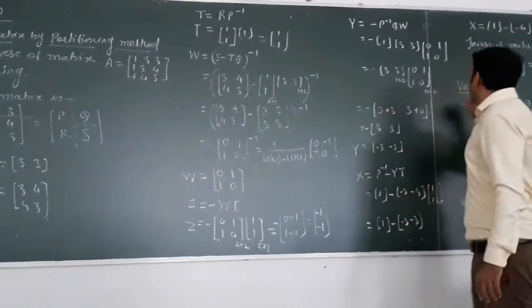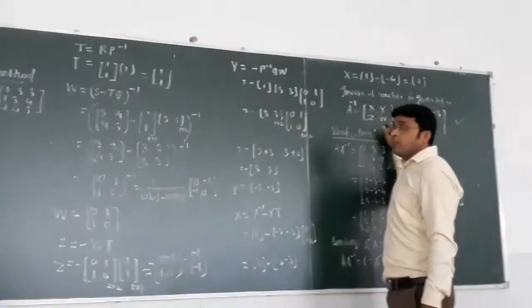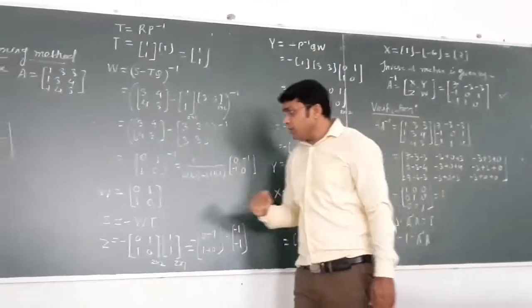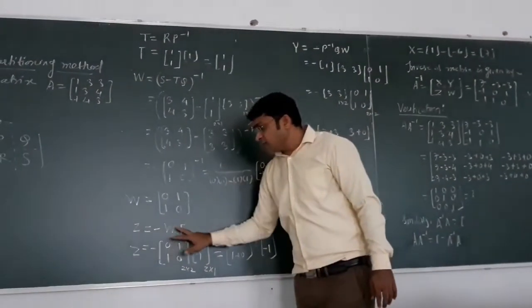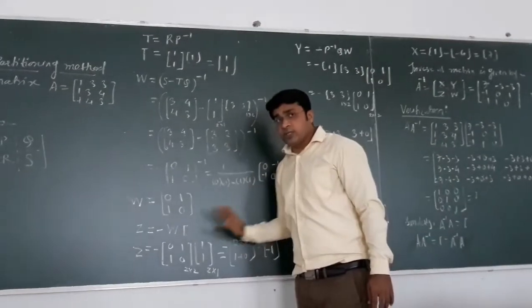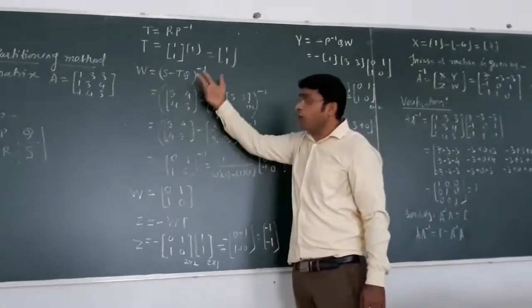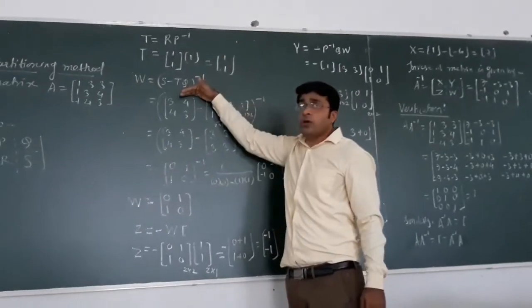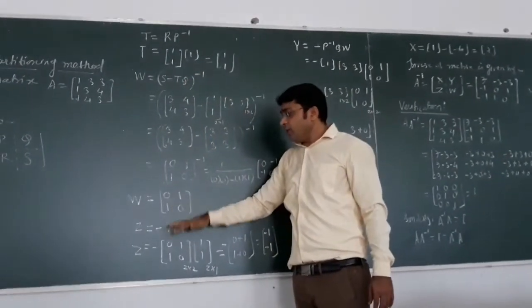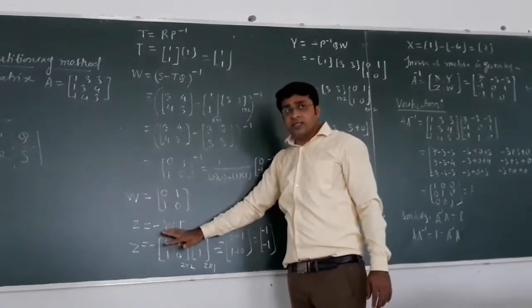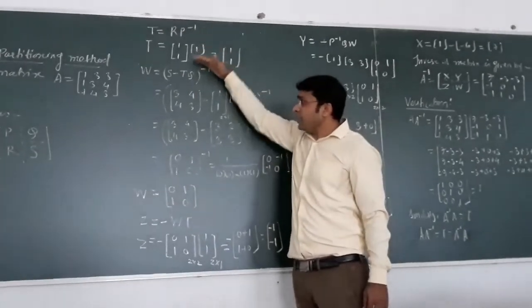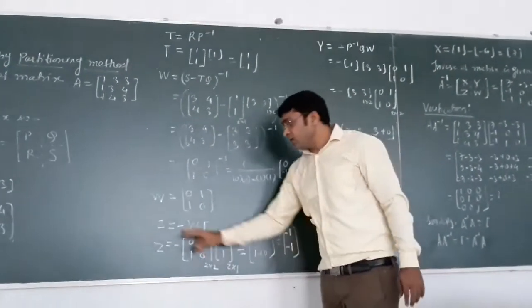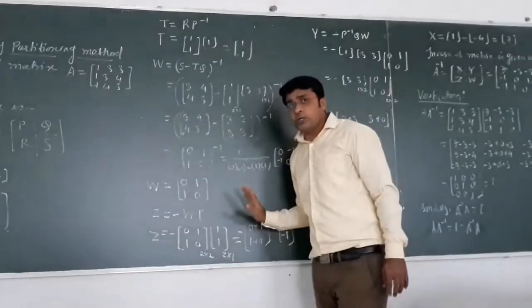The inverse formula uses x, y, z, w. We now calculate z, which equals minus W times t. The previous calculations are always required since W and t are both needed here. So z = −W·t.